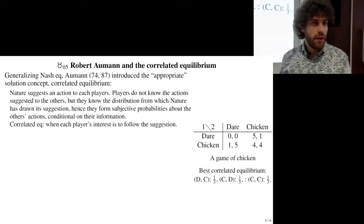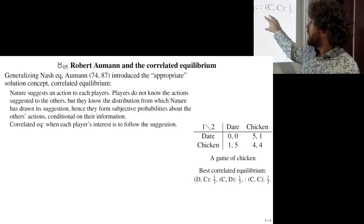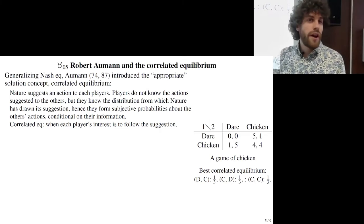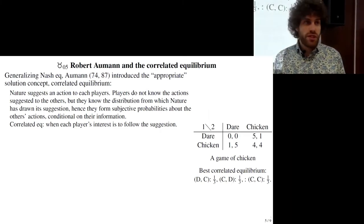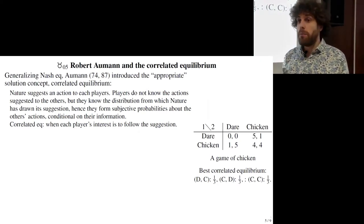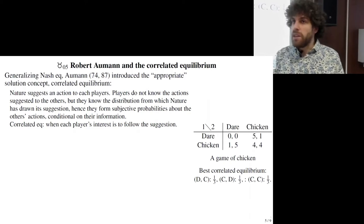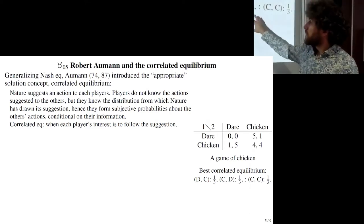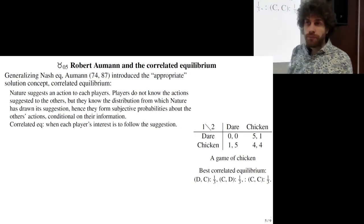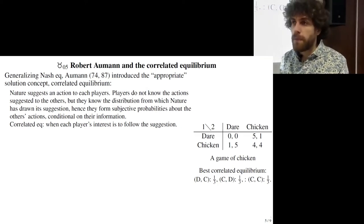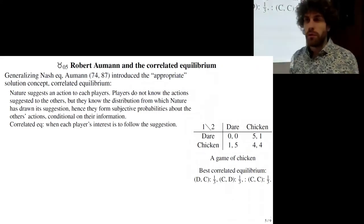Not only do we get a higher expected payoff for the average player, but also a better expected payoff for the player with the minimum payoff. If the two players play this correlated equilibrium, they are both better off than playing the mixed strategy Nash equilibrium.